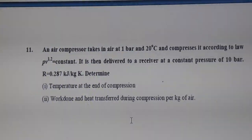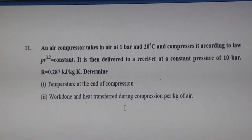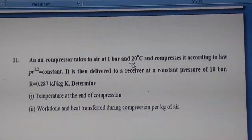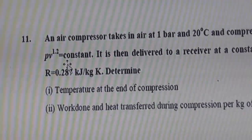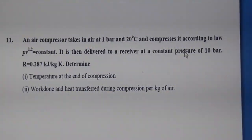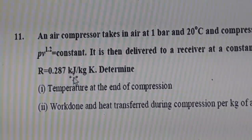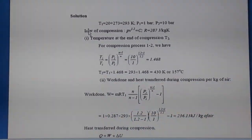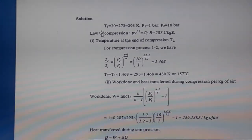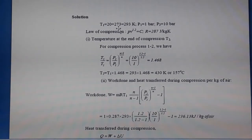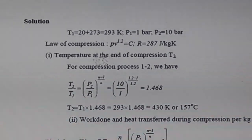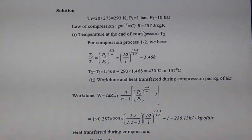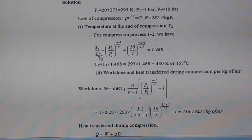To find heat transfer during compression, we apply the first law of thermodynamics. Given data: p1 = 1 bar, T1 = 20°C = 293 K, law of compression pv^1.2 = C so n = 1.2, p2 = 10 bar, R = 0.287 kJ/kg·K = 287 J/kg·K.